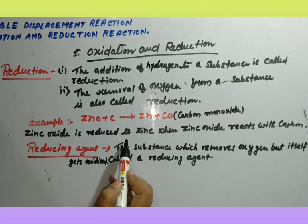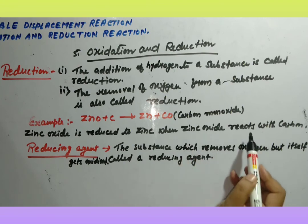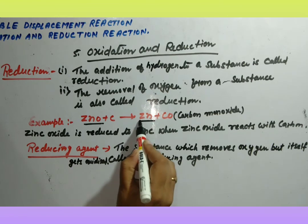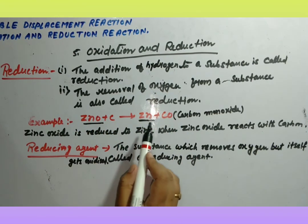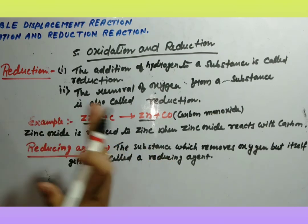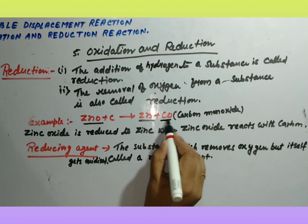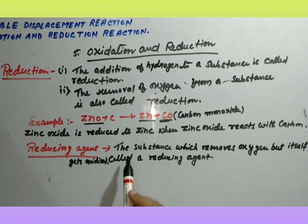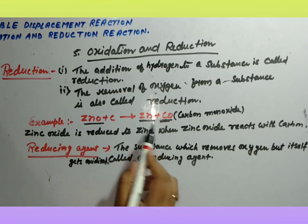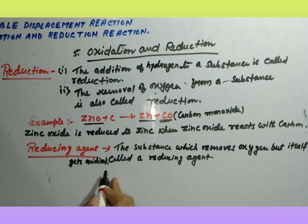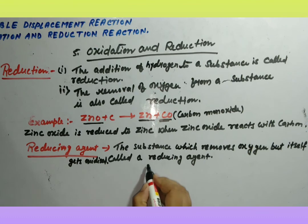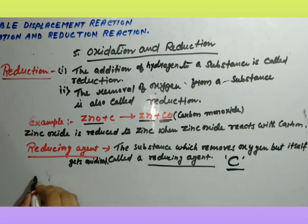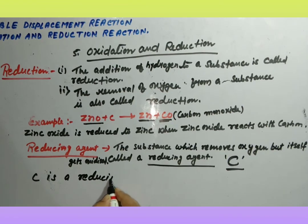Zinc oxide is reduced to zinc, and which is oxidized? Carbon — carbon is oxidized because it gains oxygen to form carbon monoxide. So reducing agent is the substance which removes oxygen from another substance, but itself gets oxidized. In this reaction, carbon is the reducing agent.